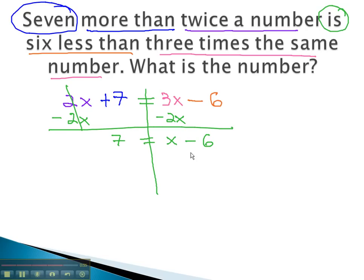Finally, to get the x alone, we can add 6 to both sides. We find 13 equals x. Our number is 13. 7 more than twice 13 is 6 less than 3 times the same 13.